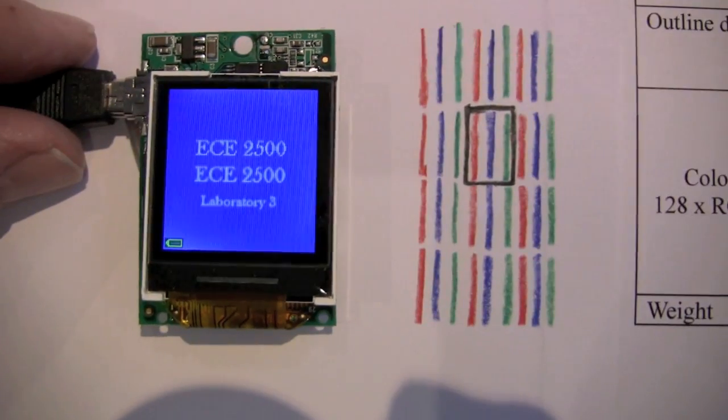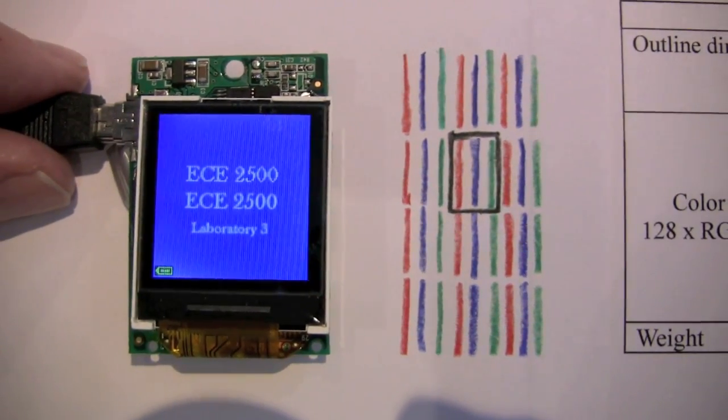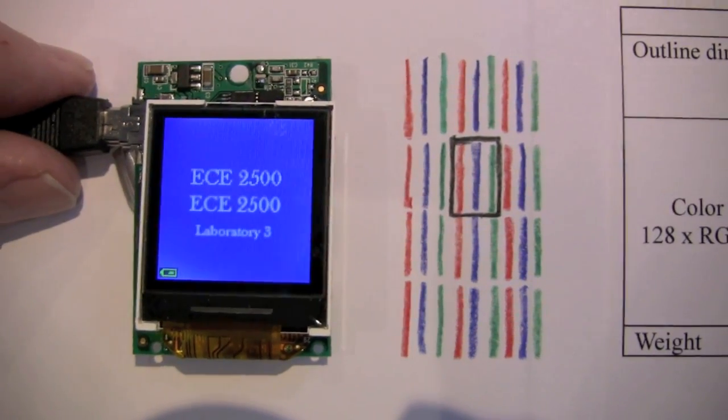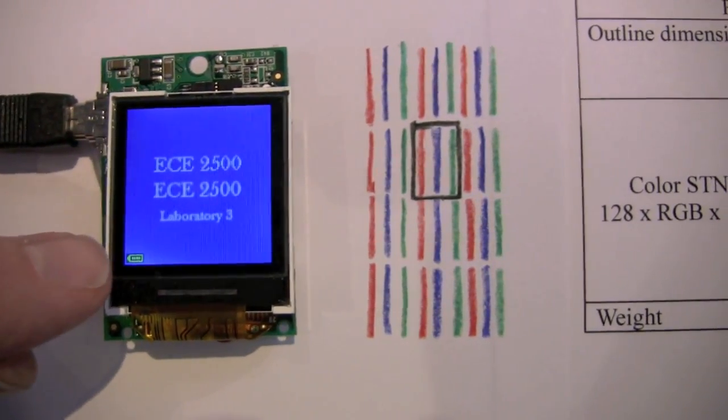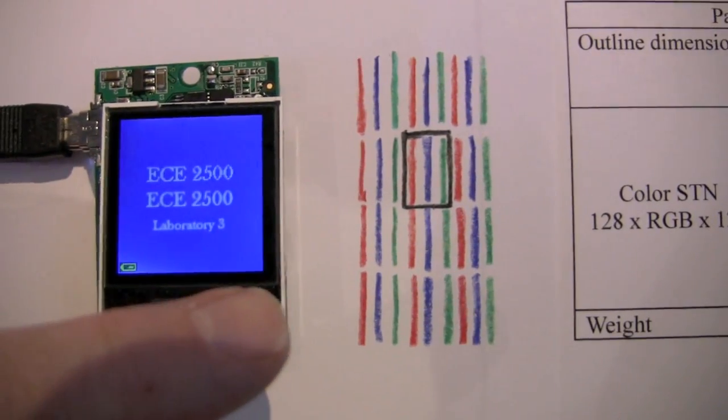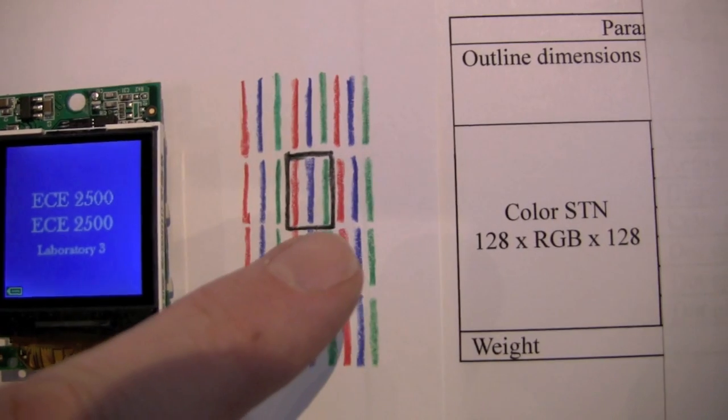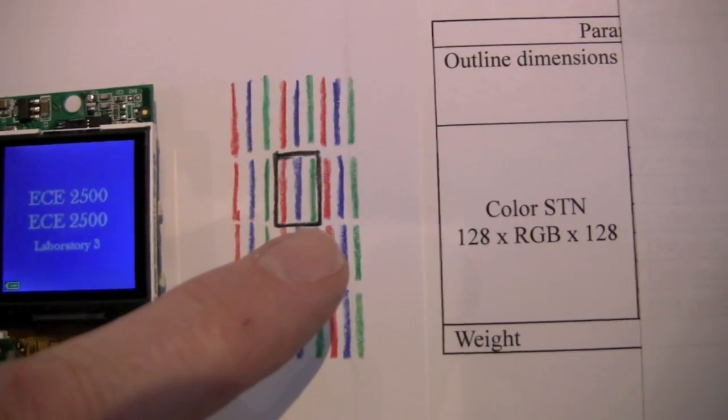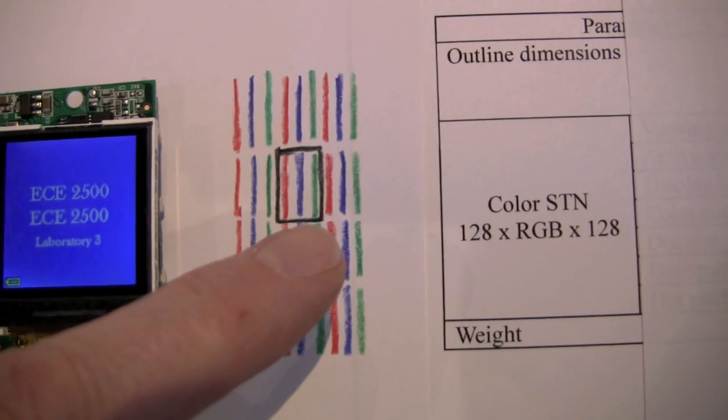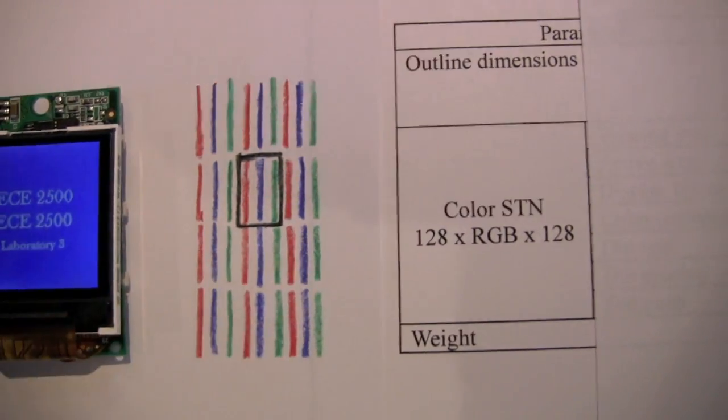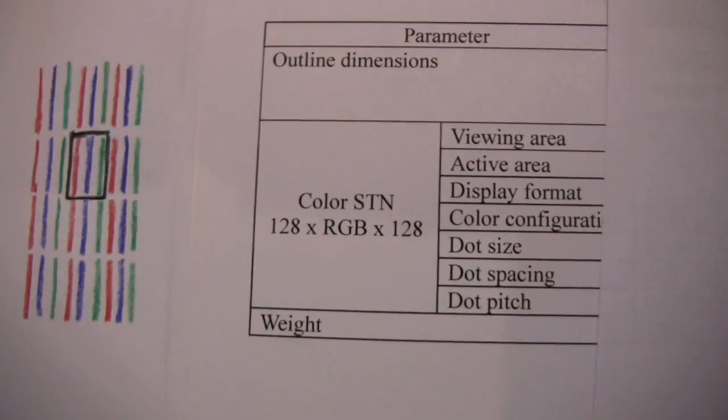As I zoom in here, we can see that we have a simple image showing ECE 2500 laboratory number 3. There's 128 of these pixels running this way, 128 running this way. Each of them have this geometry shown in the center, showing the individual filaments or individual subpixels in this geometry. Let's move this out of the way, and then we can show you some more specifics associated with this.